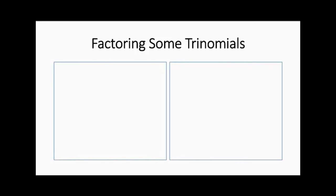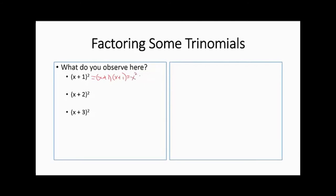Factoring some trinomials. After looking at the difference of two squares, we may wonder what happens with (x plus 1)(x plus 1). We're multiplying these two terms, but since we don't have a plus and minus, the middle terms won't cancel — we get x squared plus x plus x plus 1, which is x squared plus 2x plus 1. The middle term is just twice the square root of the constant.